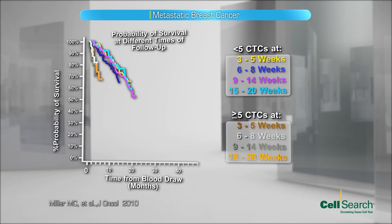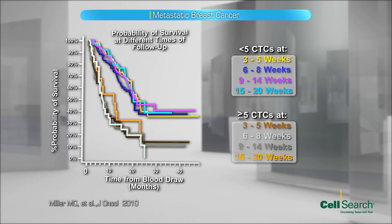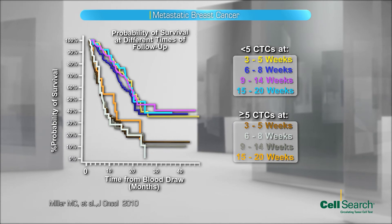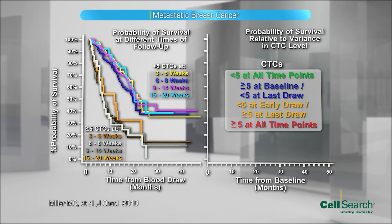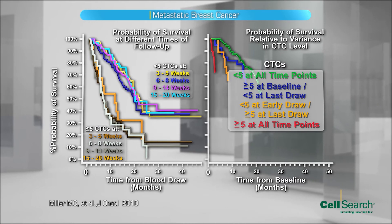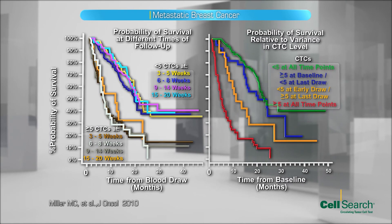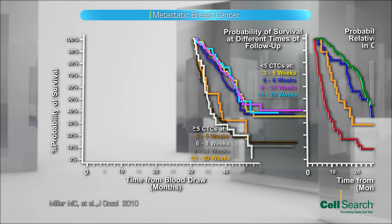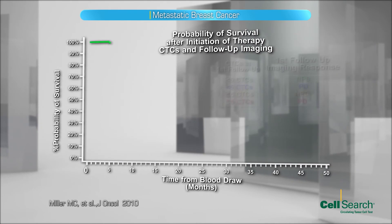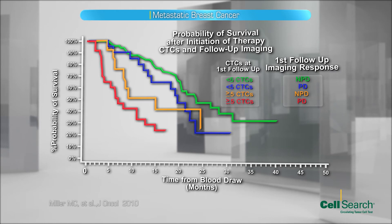Levels of CTCs are also highly predictive of progression-free survival and overall survival at any time point during treatment, and changes in CTC levels are also predictive of reduced or improved survival. Furthermore, the CellSearch CTC test has also been shown to provide predictive and prognostic information similar to that from imaging.